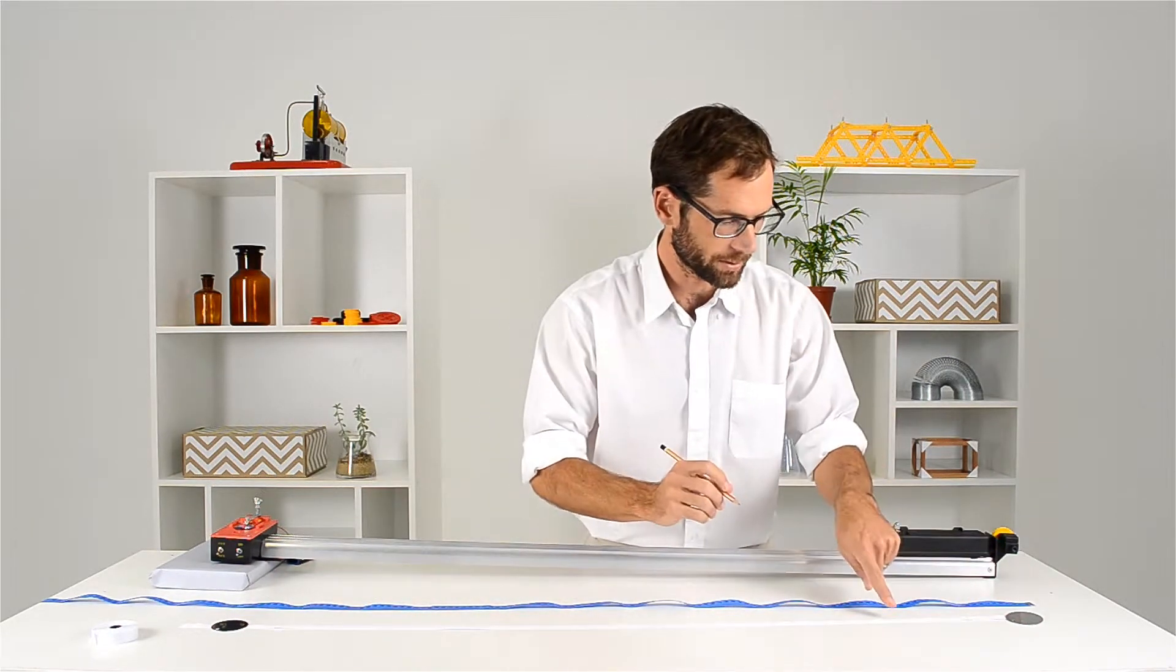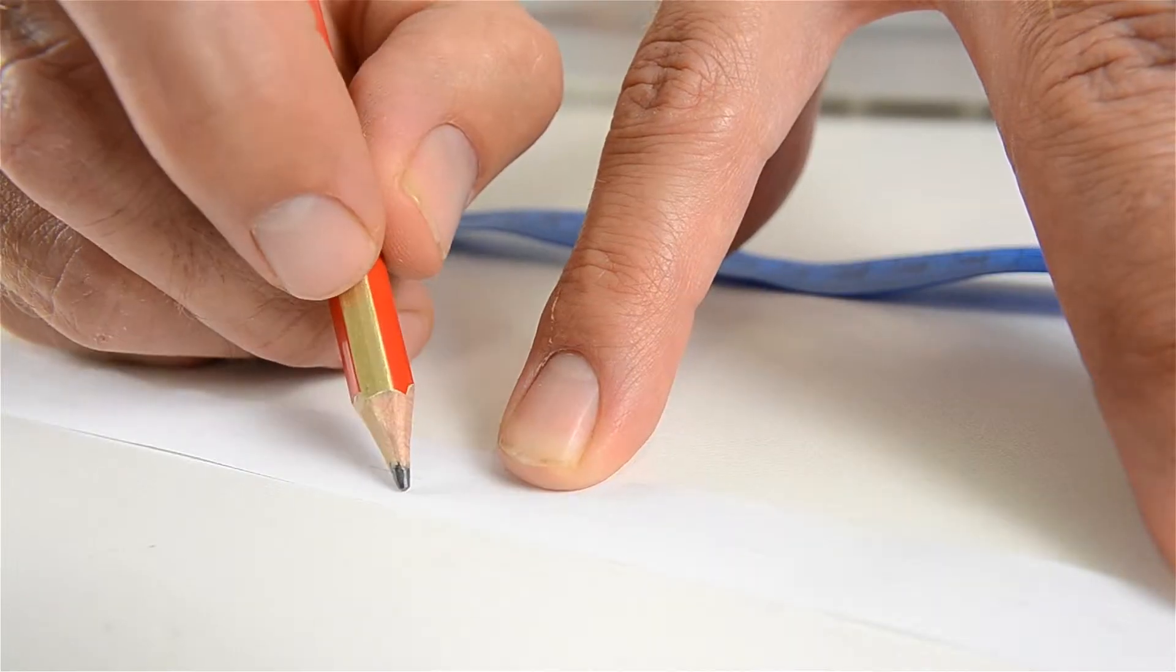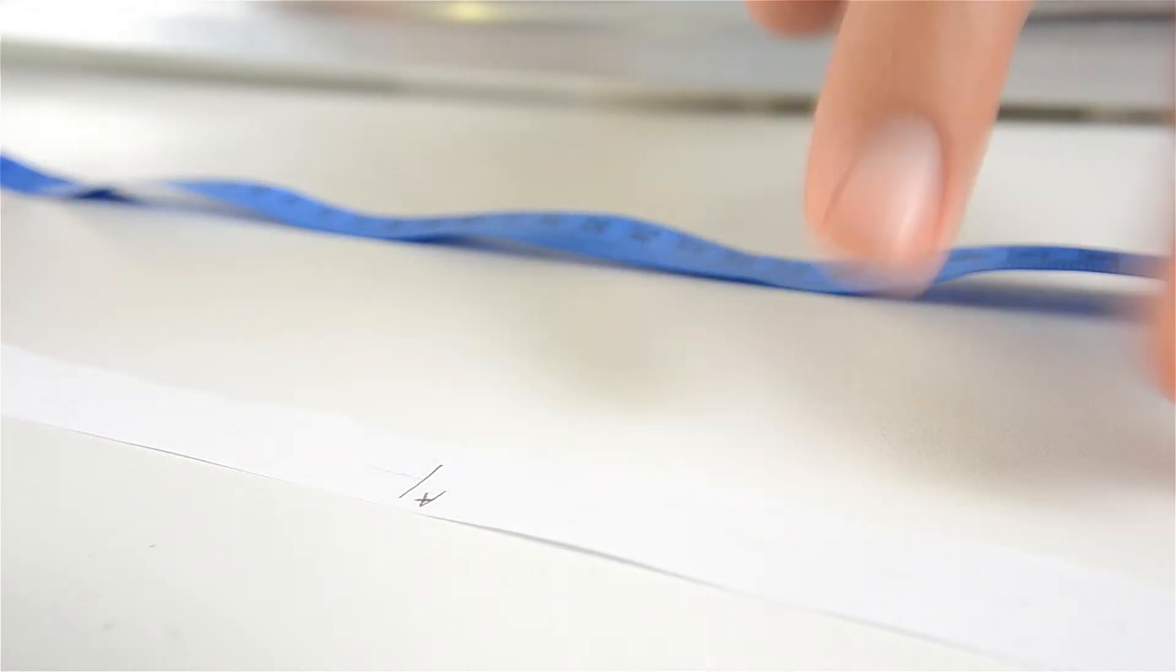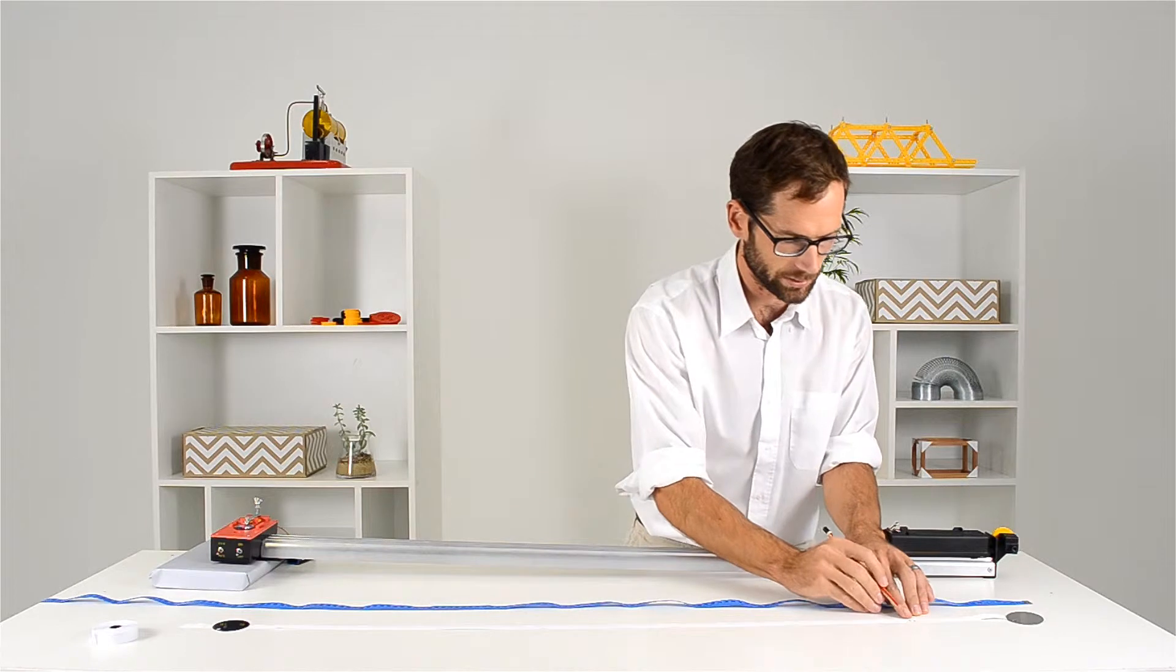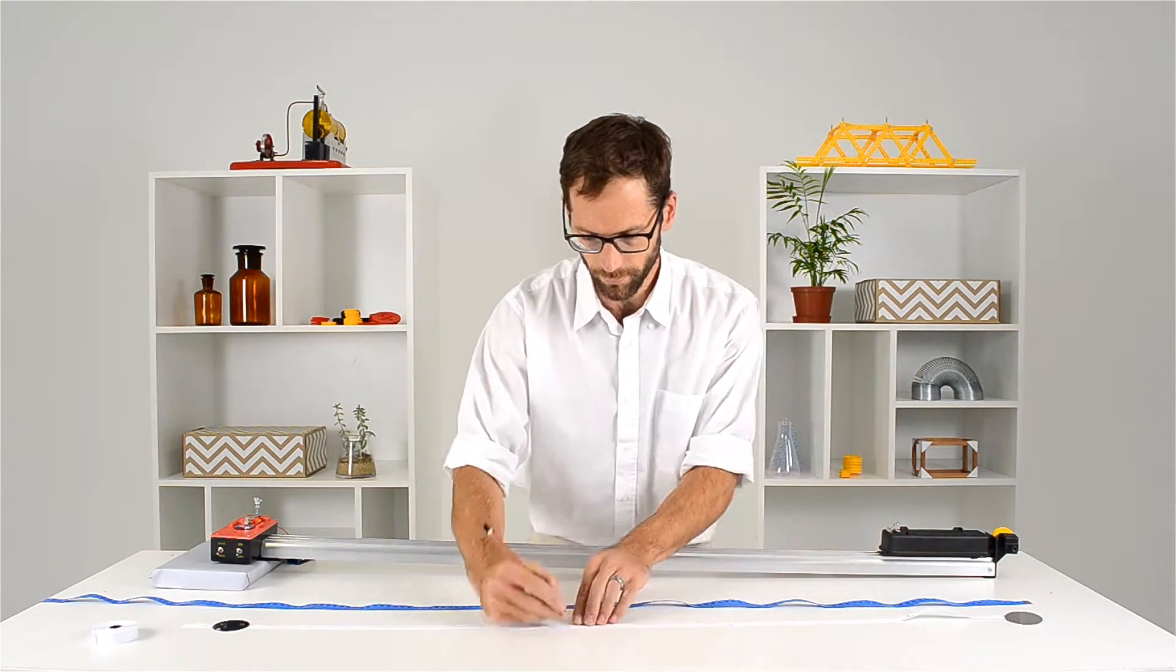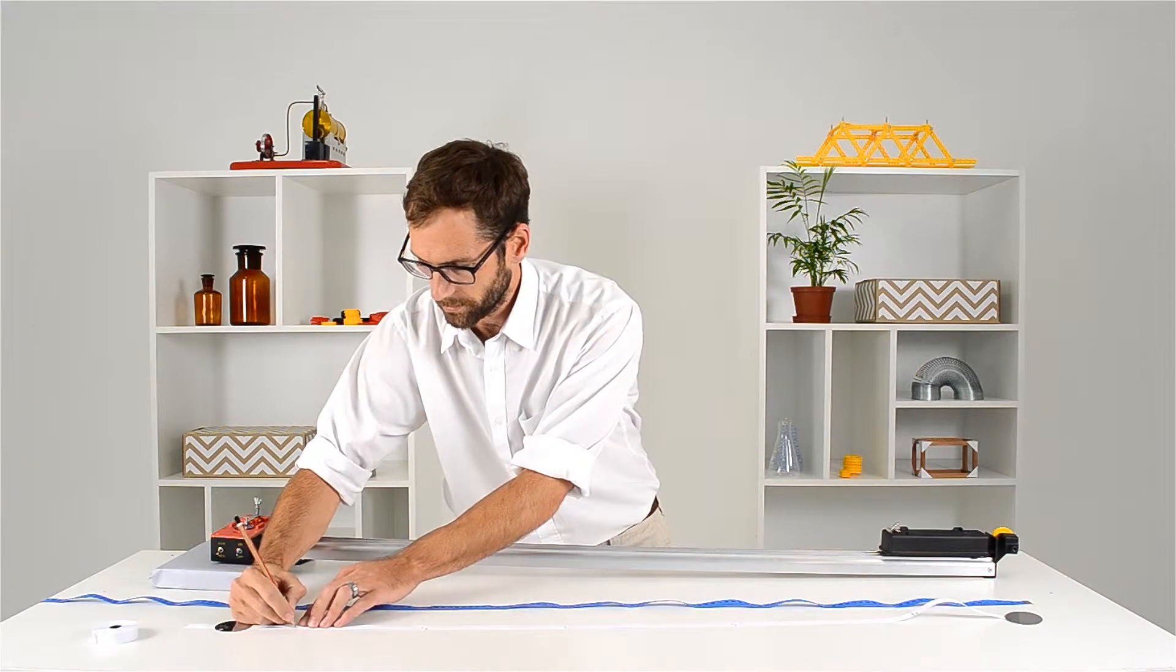And then I'm going to ignore the first couple of dots on the tape because that was when I was accelerating it down the track with my finger. So I'm going to start off after about 10 dots and just write A and then measure off 10, B, C, etc. So there's B, C, D and E.